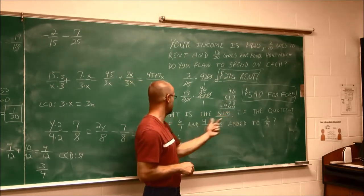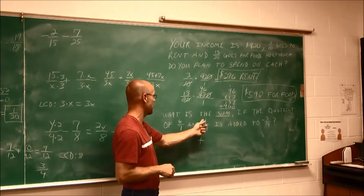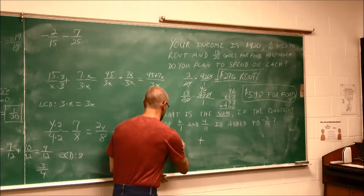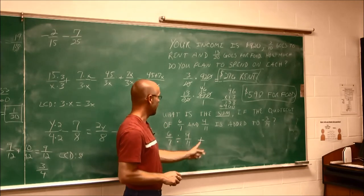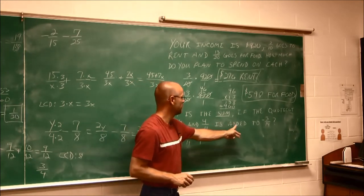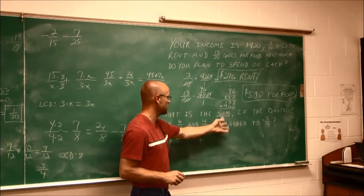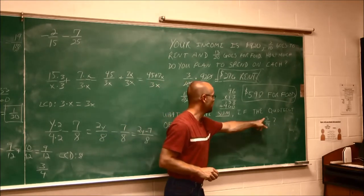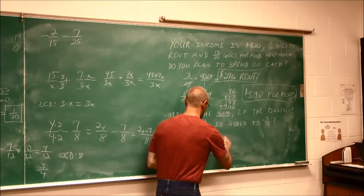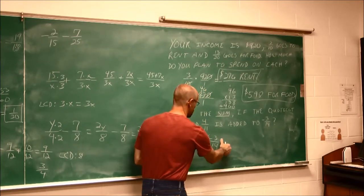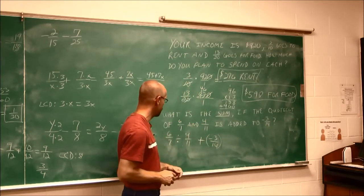And it says the quotient of 6 7ths and 4 11ths. Okay, so I'm going to divide 6 7ths by 4 11ths. And then find that sum, when I add it, adding and sum are the same term, to negative 3 14ths. And maybe I put parentheses around it to separate my signs.